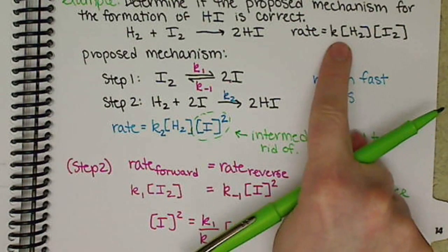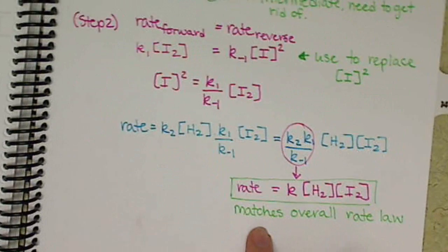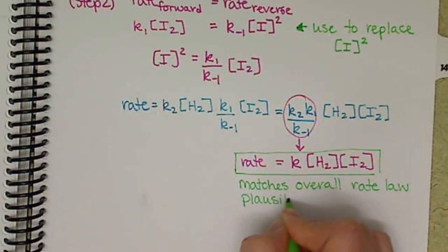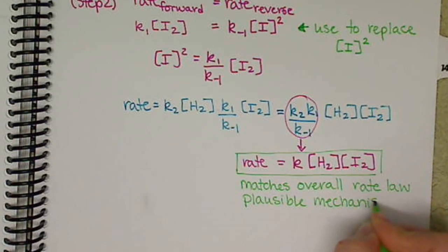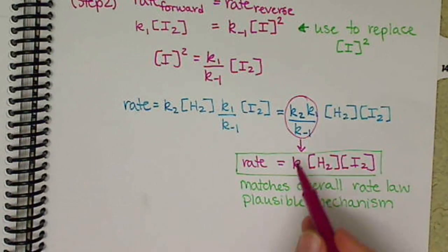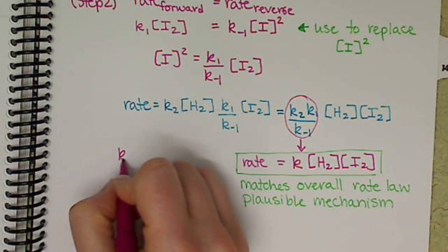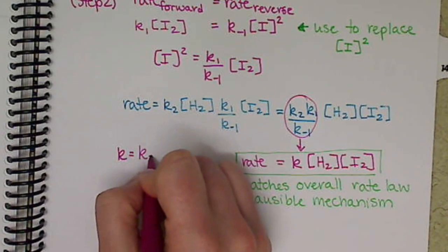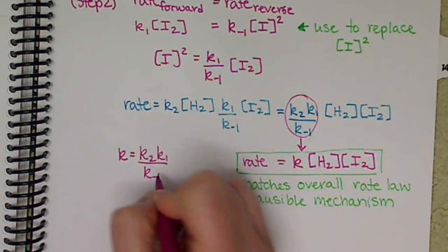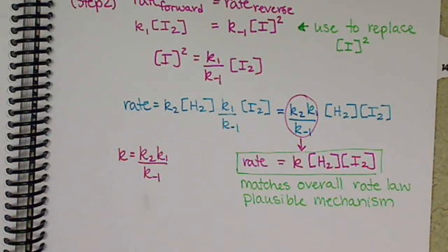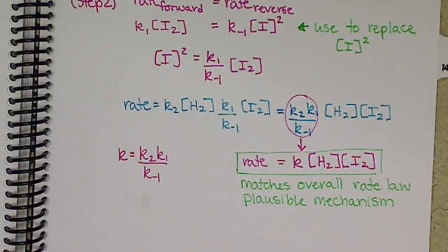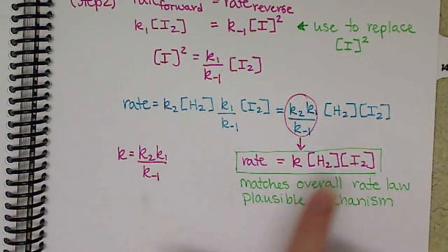That was what we were given initially, so our derived rate law matches, and this is a plausible mechanism. Our overall K value equals K2 × K1 / K-1. Make sure when looking at plausible mechanisms that just because the rate-determining step gives a rate law that doesn't match your overall rate law, you go through the process of replacing the intermediate to see if you can match the overall rate law equation.